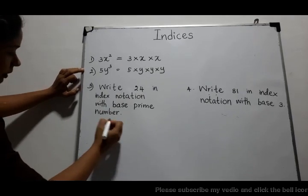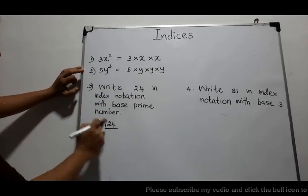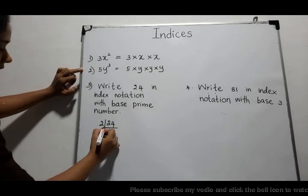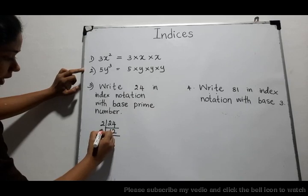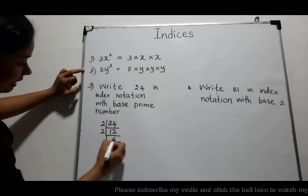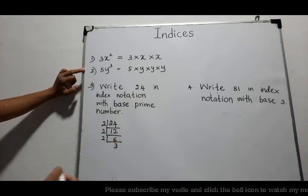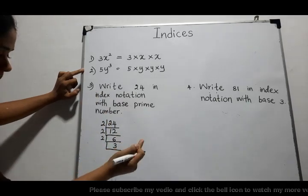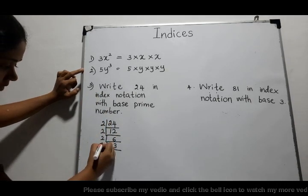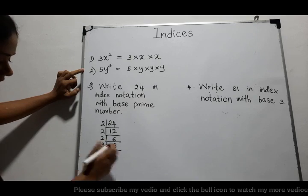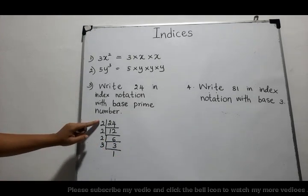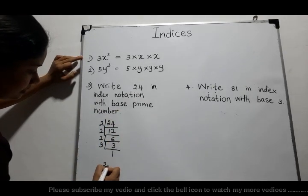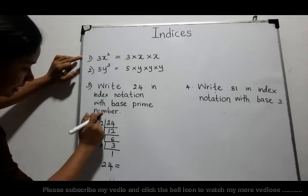Let's write 24 with base prime number. Our first prime number is 2, so we divide 24 by 2 to get 12, then 12 by 2 to get 6, then 6 by 2 to get 3. We cannot divide 3 by 2, so our next prime number is 3. Dividing 3 by 3 gives 1, and the division is finished.